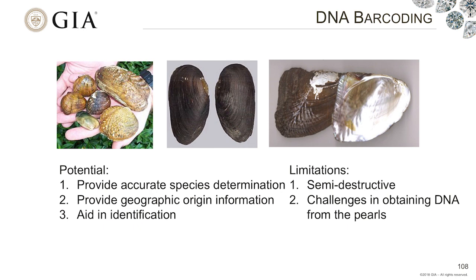However, if you can successfully extract DNA from the sample, you will almost always get an accurate species or at least genus determination, which can help with the geographic origin and the identification of the sample. So it can solve three issues in one shot — it is a very good technique for pearl testing. We are going to continue to work on this area, especially in terms of DNA recovery for the future.